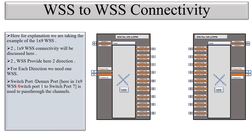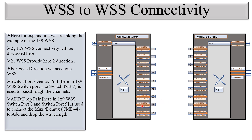On a 1x9 WSS, switch ports one to seven are used to pass through channels. The remaining two ports — switch port eight and switch port nine — are used to connect to the CMD44 for add/drop. This is called the add/drop pair. Switch port eight and switch port nine connect to the MXDMUX — whether it's MD44, 1796, or any other type — to drop the circuits.